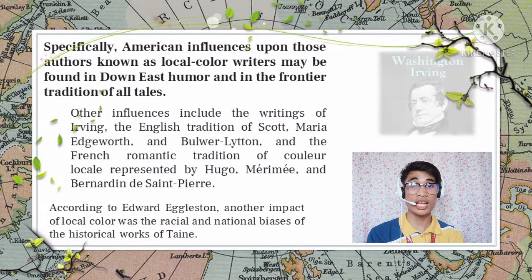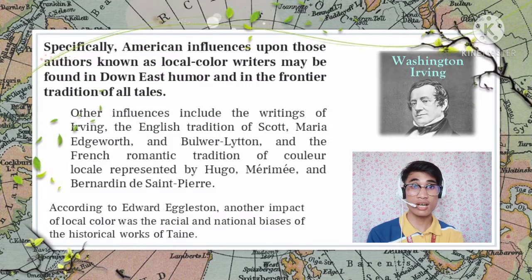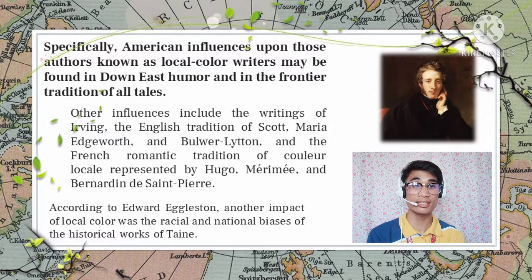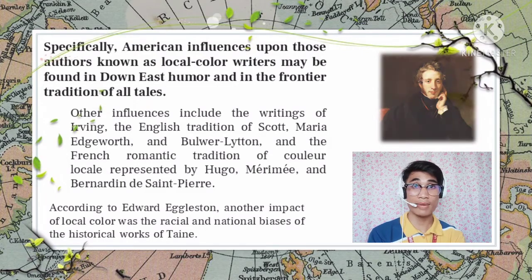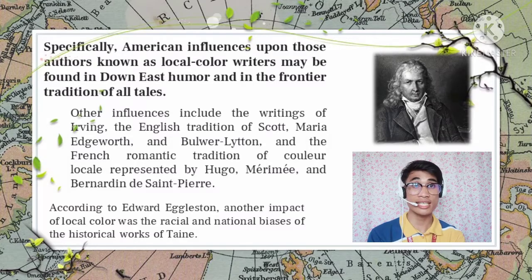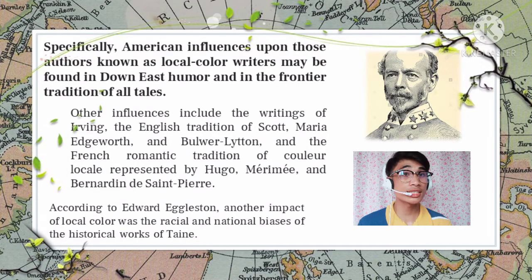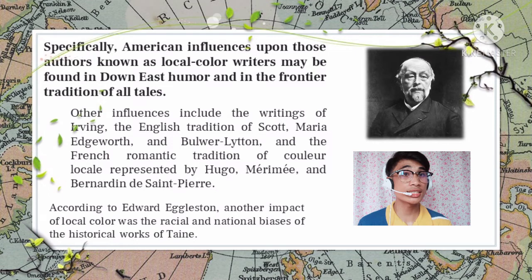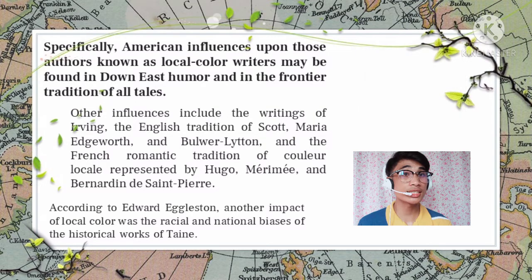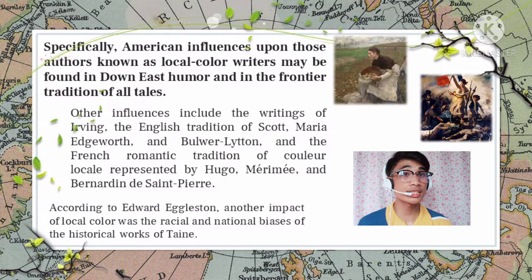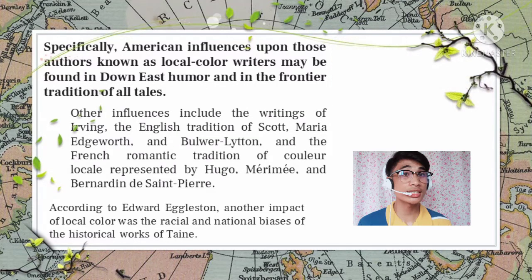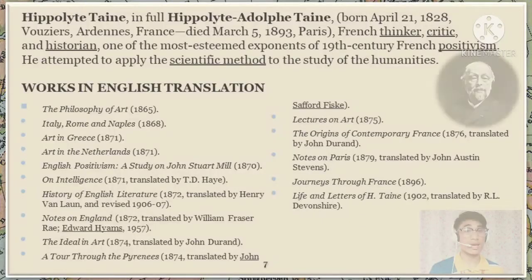Other influences include the writings of Irving, the English tradition of Scott, Maria Edgeworth, and Bulwer-Lytton, and the French Romantic tradition of local color represented by Hugo, Mérimée, and Bernardine de Saint-Pierre. According to Edward Eggleston, another impact of local color was the racial and national biases of the historical works of Taine, which certainly impelled him to a closer observation of his own region. In local color literature, one finds the dual influence of romanticism and realism, since the author frequently looks away from ordinary life to distant lands, strange customs, or exotic scenes, but retains through minute detail a sense of fidelity and accuracy of description.